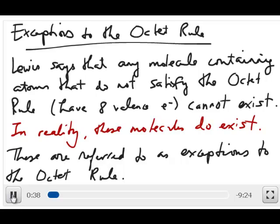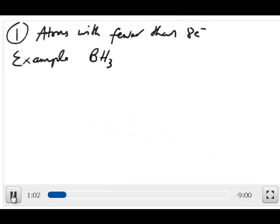However, in reality, it turns out that people have discovered molecules that you really can't draw a Lewis structure for that satisfies the octet rule. In other words, these molecules turn out to violate the octet rule, but they still exist. This is what we refer to as exceptions to the octet rule, and in this video we'll discuss these 3 major exceptions.